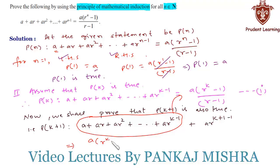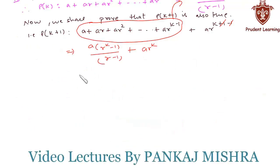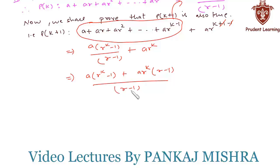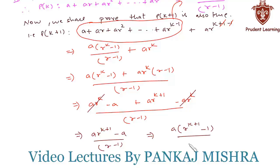So we have a times r raised to k minus 1 upon r minus 1, plus ar raised to k. Taking r minus 1 as LCM, this becomes a times r raised to k minus 1 plus a times r raised to k into r minus 1, whole upon r minus 1. Expanding, we get ar raised to k minus a plus ar raised to k+1 minus ar raised to k, all upon r minus 1. The ar raised to k terms cancel, leaving a times r raised to k+1 minus 1, whole upon r minus 1.